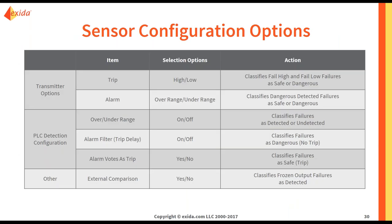Let's dive a little deeper into that. You saw Excellencia's classification options — let's go through each and see what it means. First, you have your transmitter option where you can choose if it is a high or a low trip. This is going to classify your fail high and fail low failures as safe or dangerous. Then you have what Excellencia calls 'alarm' — this is saying whether an internal detected failure is driving your signal over range or under range. If it is over range, this failure will act just like a fail high. If it is under range, it will act as a fail low. This helps classify your fail detected failures from the SCRH as safe or dangerous as well.